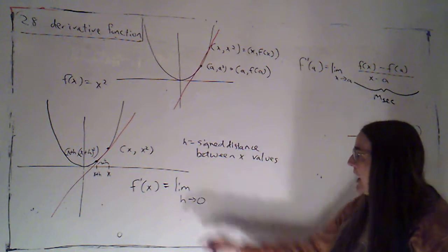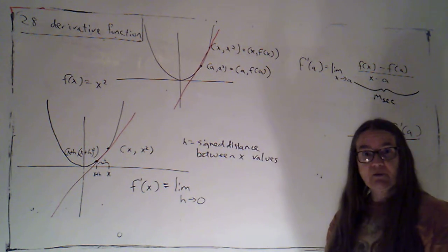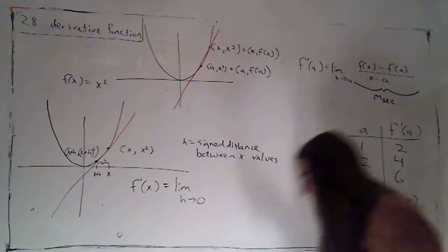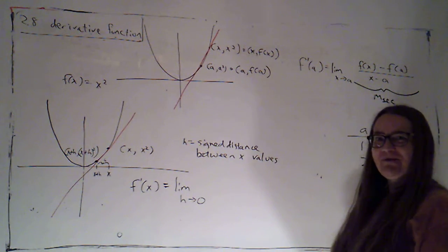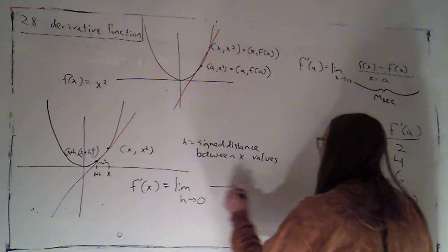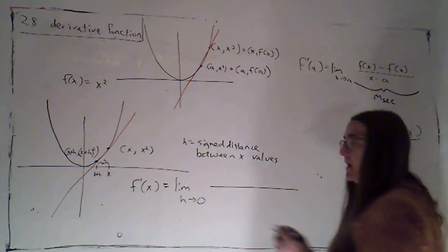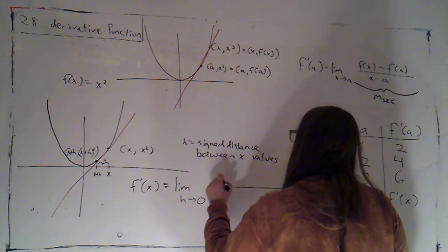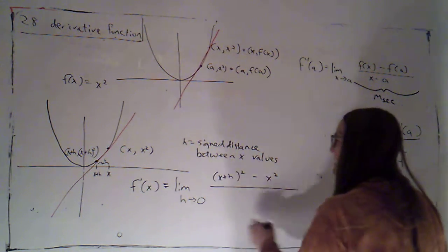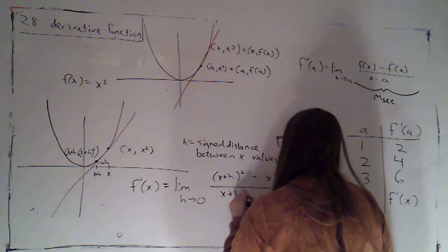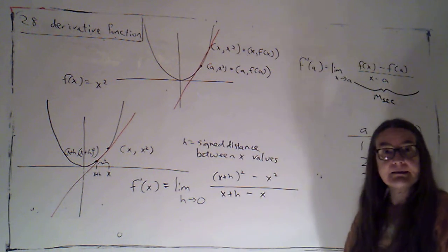Okay. So if I label my points this way, I'm always going to be taking a limit as h, the signed distance between my inputs, goes to zero. And then it's just going to be rise over run. So that would be x plus h squared minus x squared over x plus h minus x.